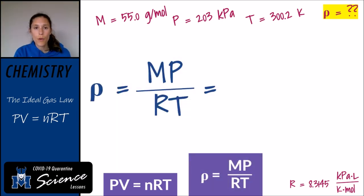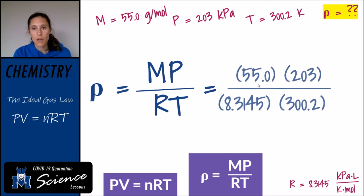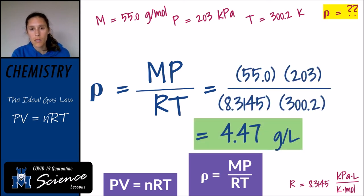Going back to the actual problem: we know our molar mass, our pressure, our temperature, and our R value. So we can plug in our numbers, and when we do that, we get a density of 4.47 grams per liter.